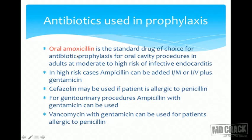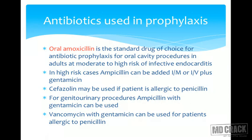Oral amoxicillin is the standard drug of choice for antibiotic prophylaxis for oral cavity procedures in adults at moderate to high risk of infective endocarditis. In high-risk cases, ampicillin intramuscularly or intravenously plus gentamicin can be added. If the patient is allergic to penicillin, cefazoline may be used. For genitourinary procedures, ampicillin with gentamicin can be used, or vancomycin with gentamicin for penicillin-allergic patients.